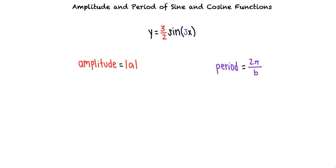This tells us that we can determine the amplitude as the absolute value of 3 halves which equals 3 halves. Next, we can determine the period as 2 pi over 3.